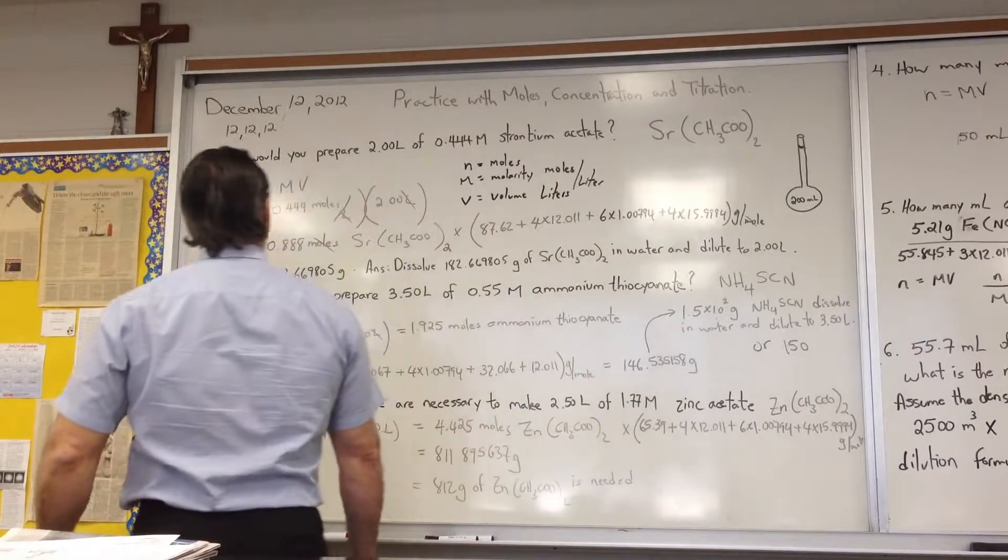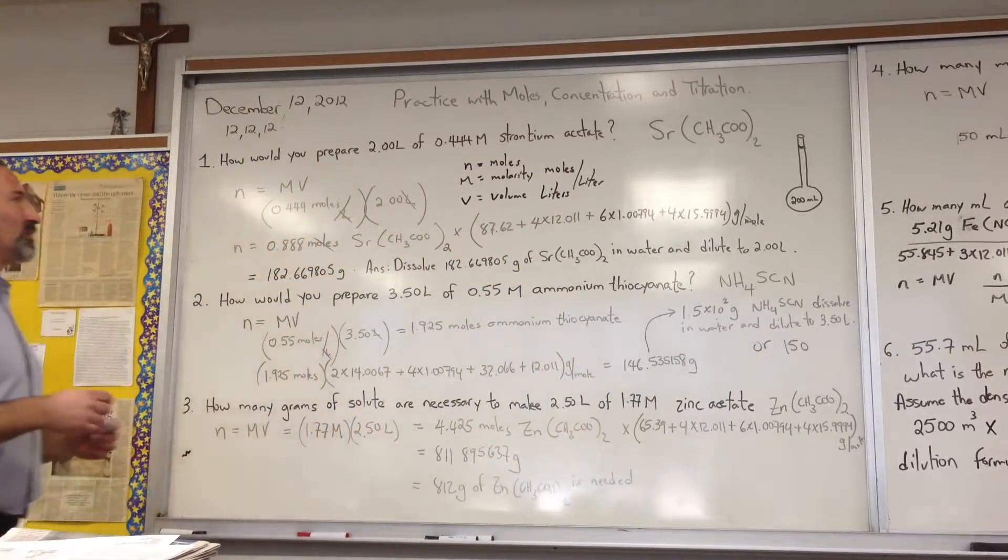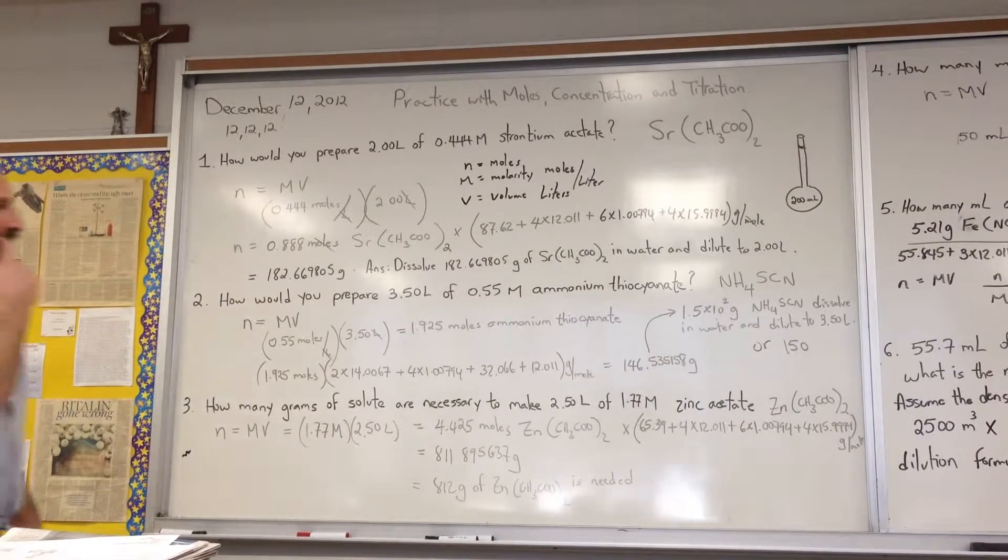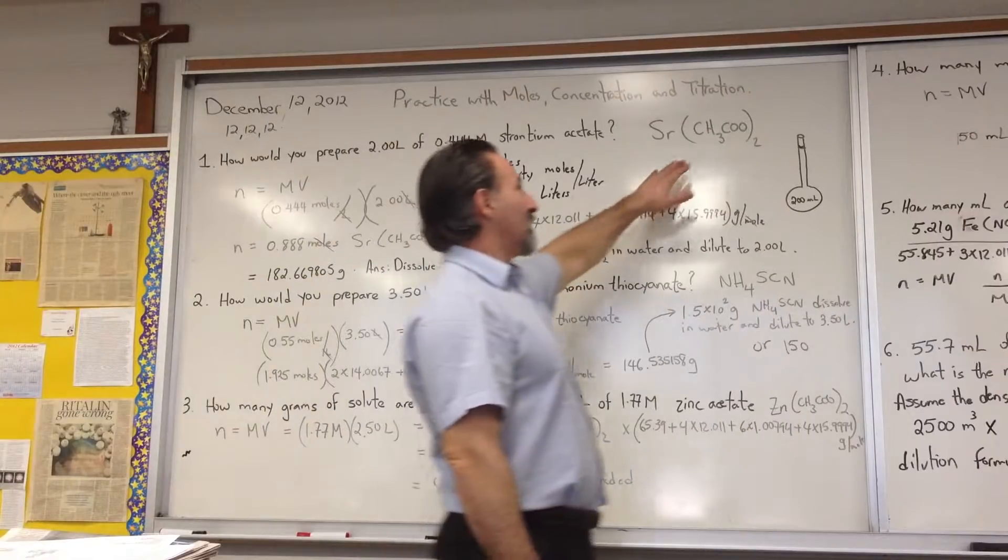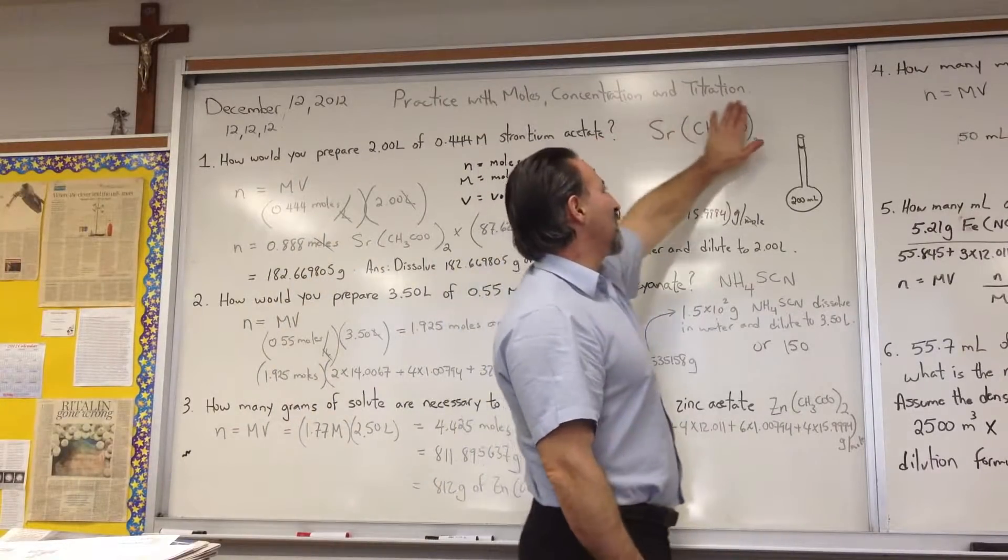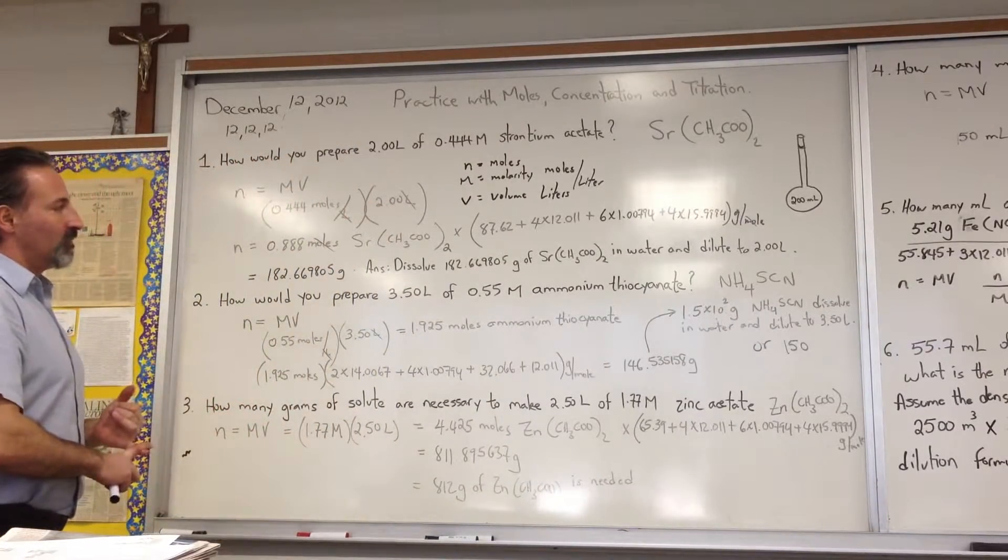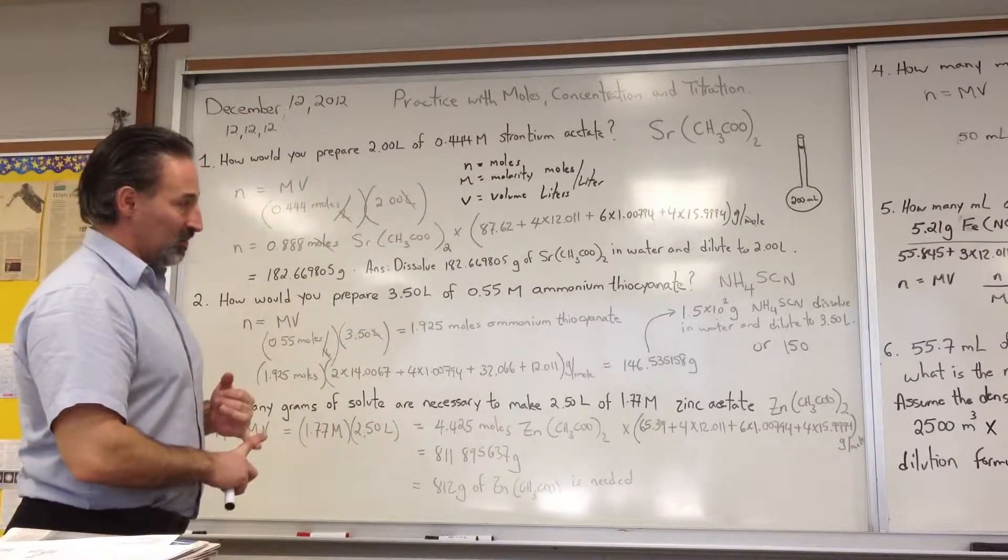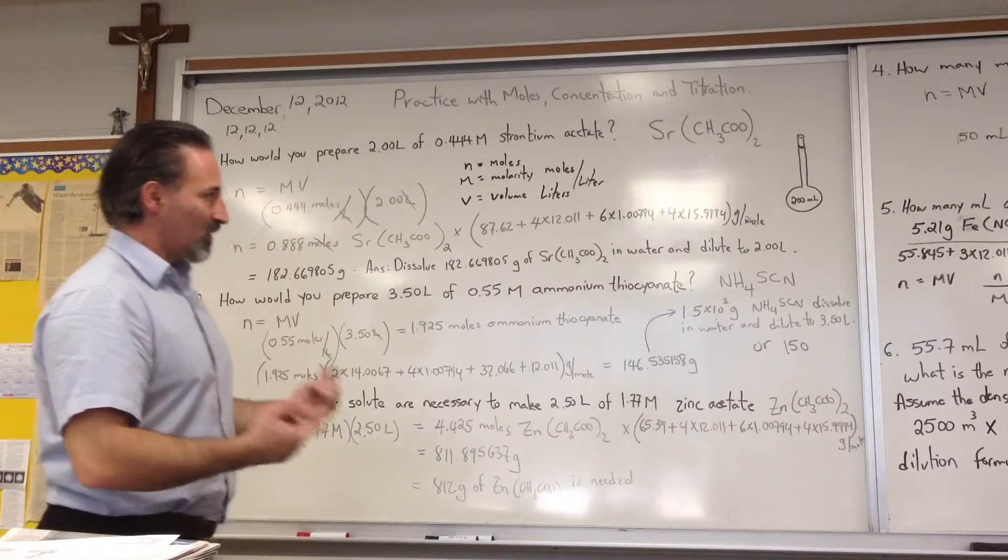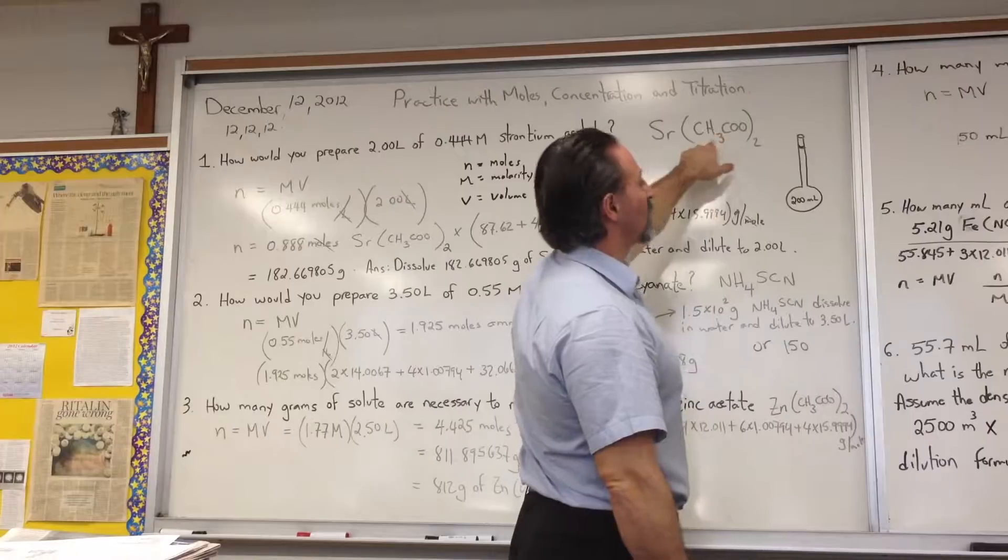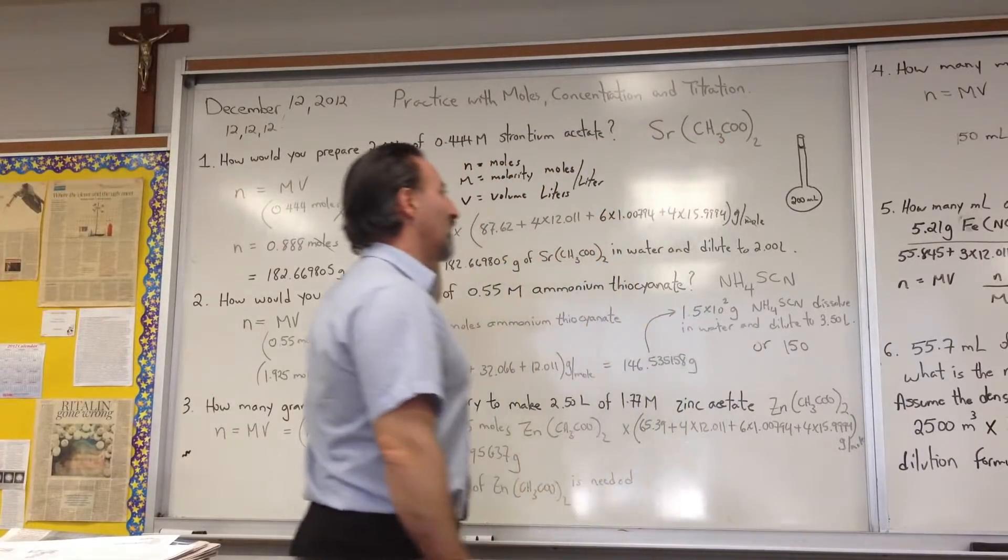How do you prepare two liters of 0.444 molar strontium acetate? I wrote strontium acetate here, but if I hadn't, it would be a good idea for you to know that strontium is a group 2 metal, so it has a plus 2 charge when it forms an ion.